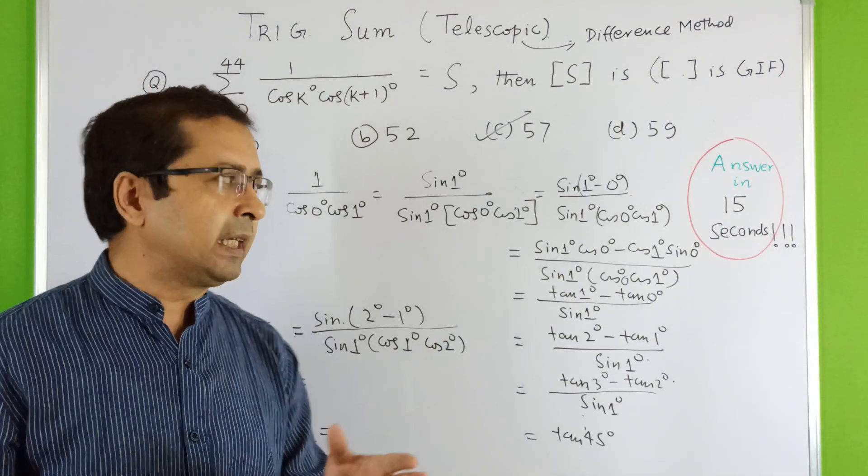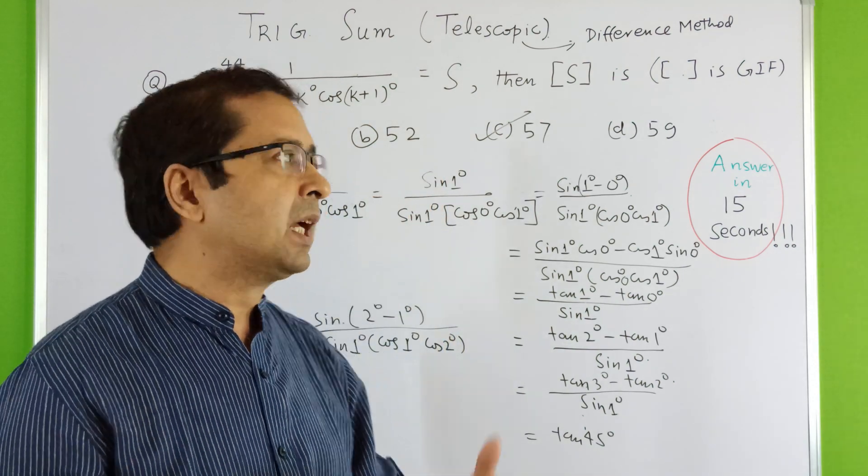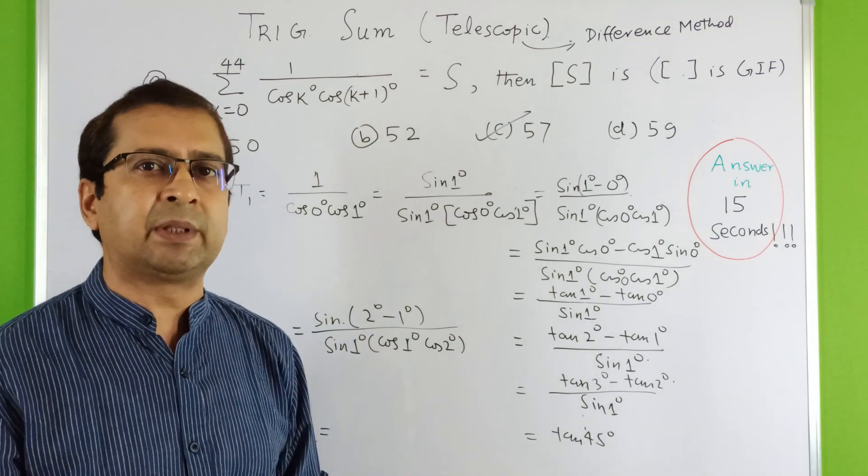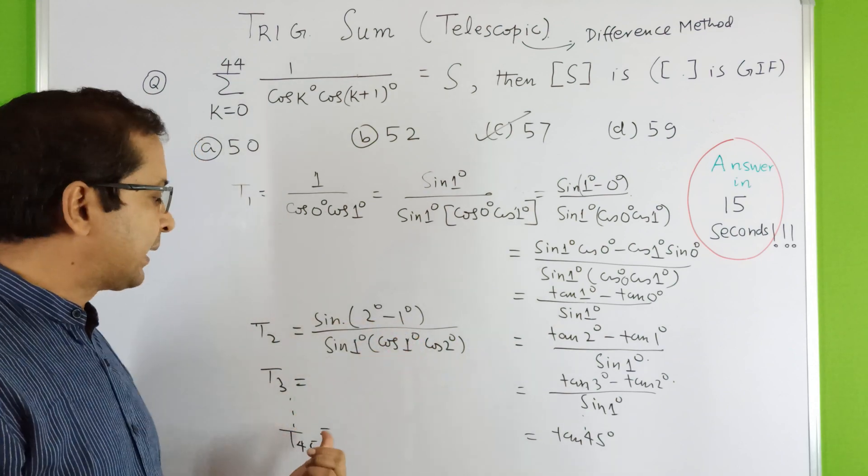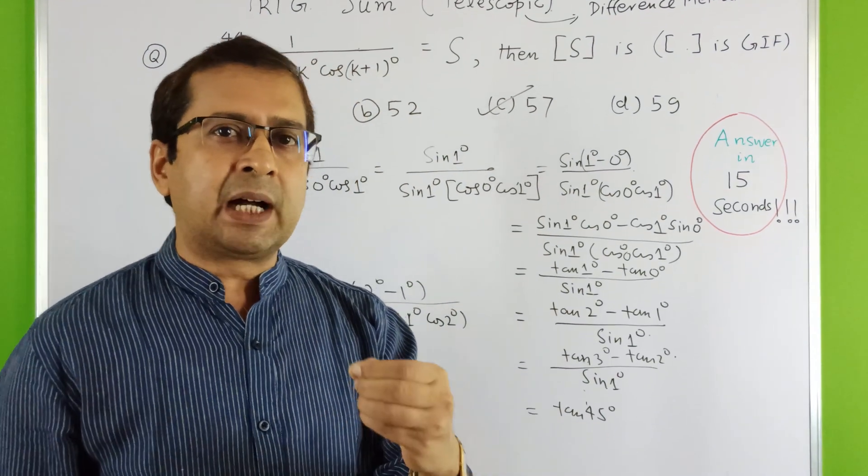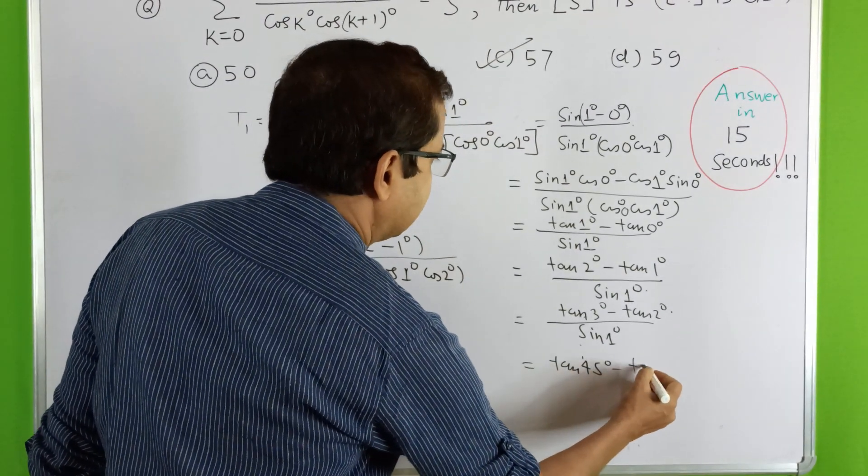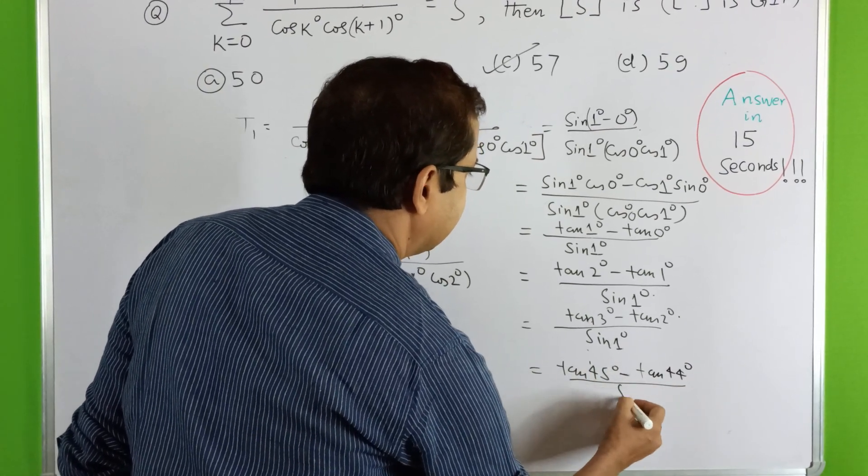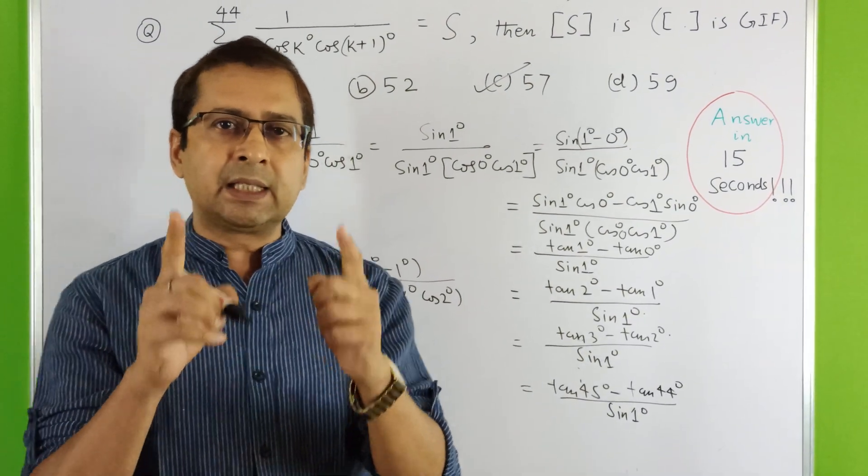In telescopic sum, generally one term pattern I will get. First term I'll break, second in the same way, last in the same way. That's why I'm saving time here. 45th term, numerator will have sin of 45 minus 44 degree. So this is tan 44 degree minus previous term divided by sin 1 degree. The trick is multiply by sin 1 degree in the numerator.